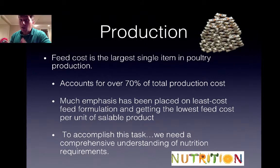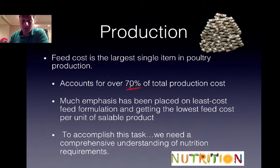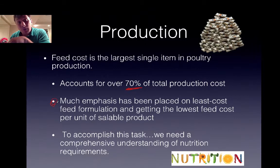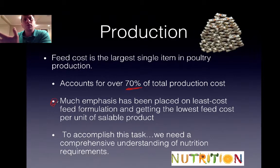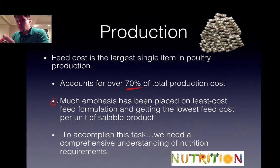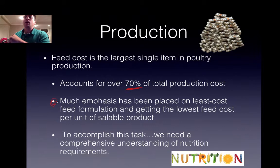Feed efficiency and feed conversion ratio are very important because feed cost accounts for around 70% of total production costs. Because of this, a lot of emphasis has been placed on finding the least-cost feed formulation and getting the least feed cost per unit of sellable product — meaning lowering the FCR by lowering feed cost. To lower feed costs, you sometimes seek out alternative ingredients and get nutrients from alternative sources, making sure they meet the nutritional needs of the broiler or layer. You need a firm understanding of nutritional requirements before getting into feed formulation.